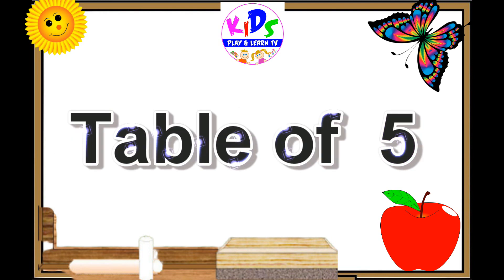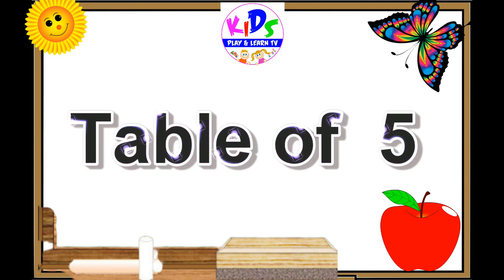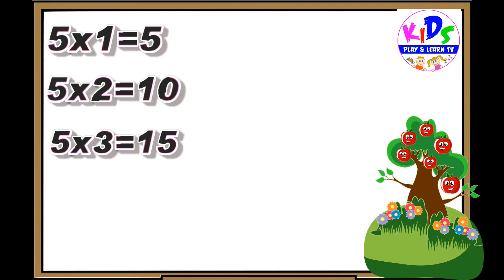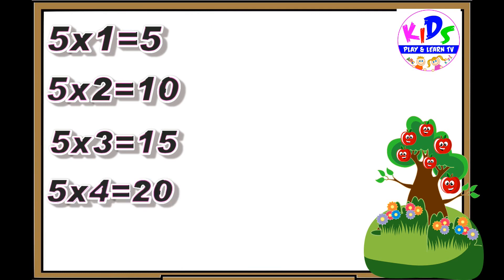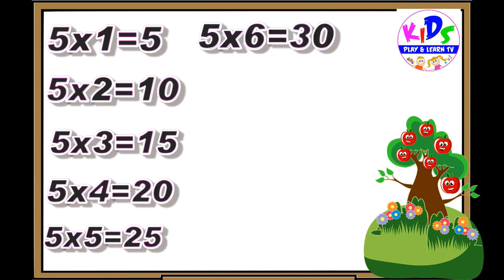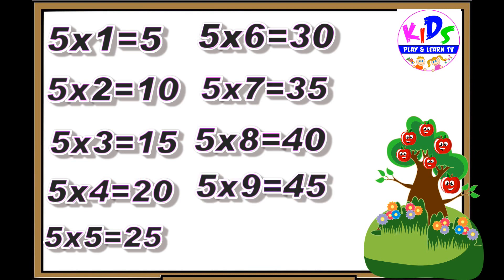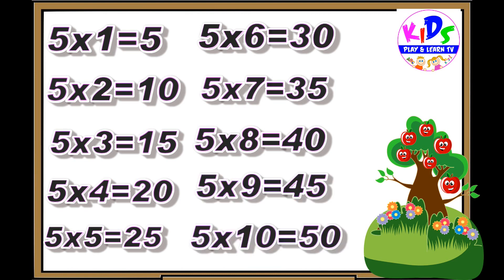Yay! Hey kids, let's repeat. 5 1s are 5, 5 2s are 10, 5 3s are 15, 5 4s are 20, 5 5s are 25, 5 6s are 30, 5 7s are 35, 5 8s are 40, 5 9s are 45, 5 10s are 50.